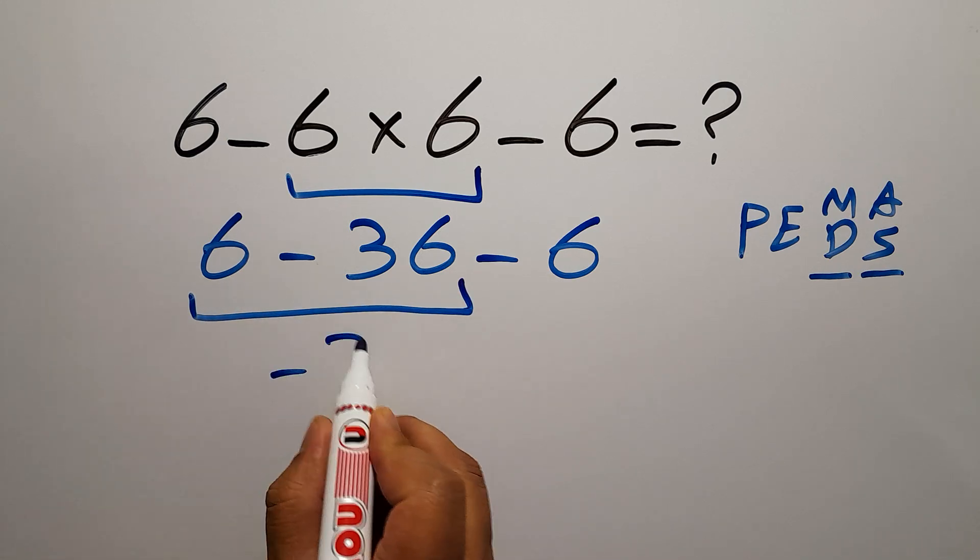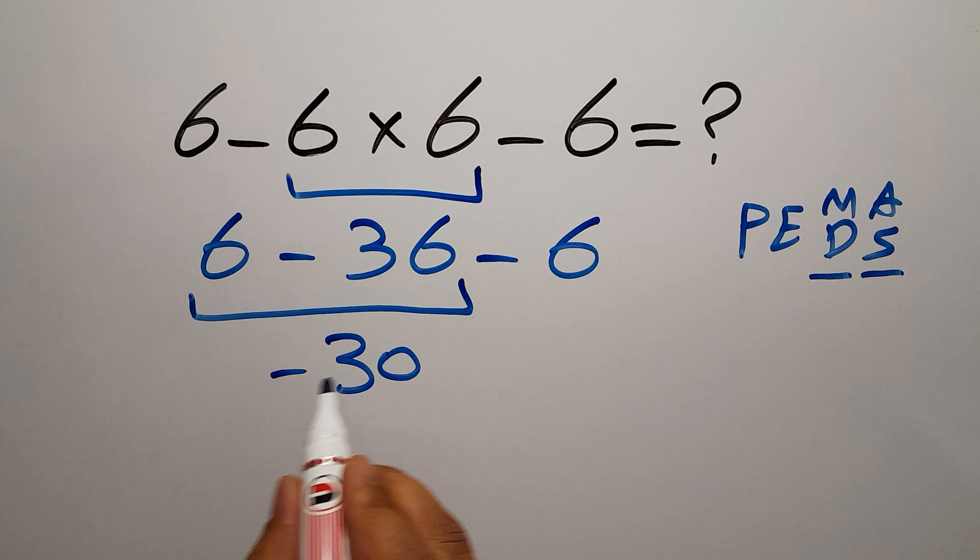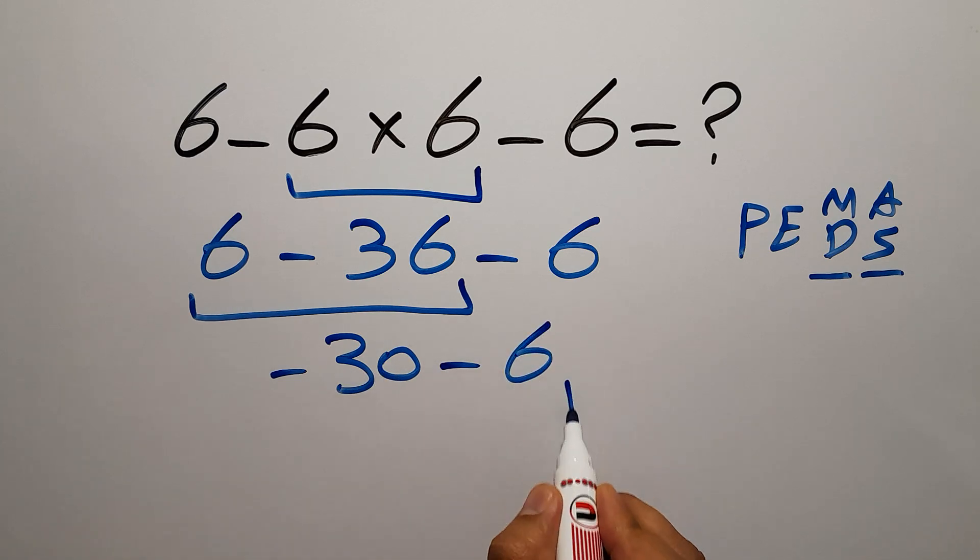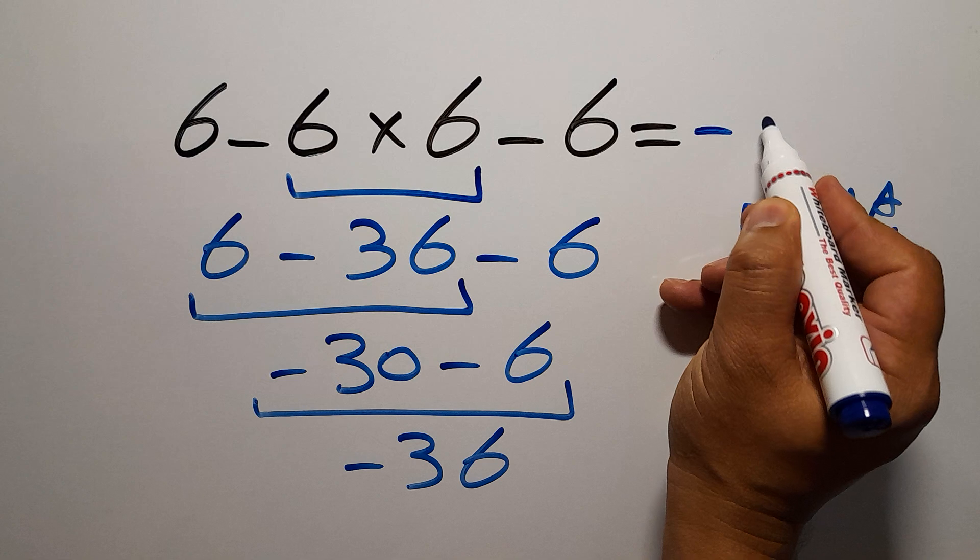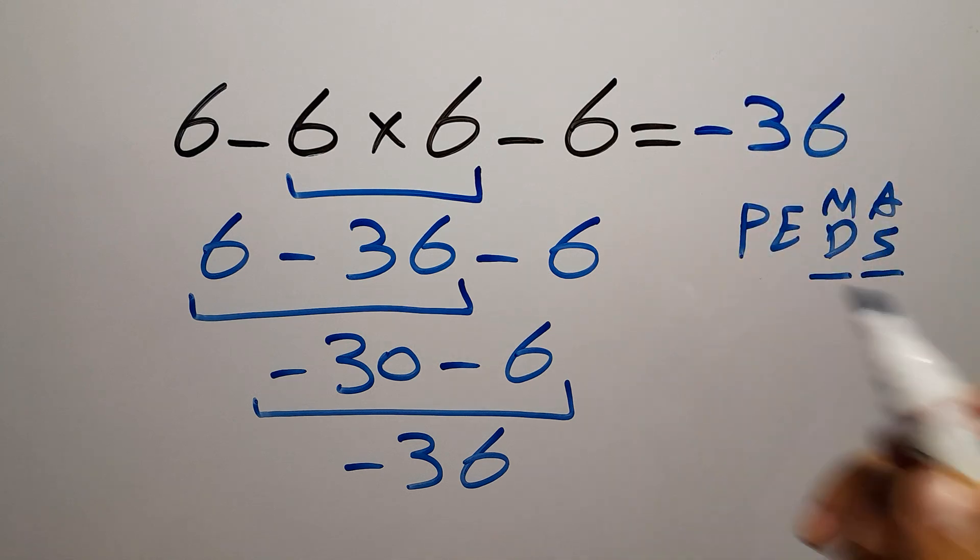So negative 30 minus 6, and this is equal to negative 36. Therefore our final answer to this problem is negative 36. The correct answer is negative 36.